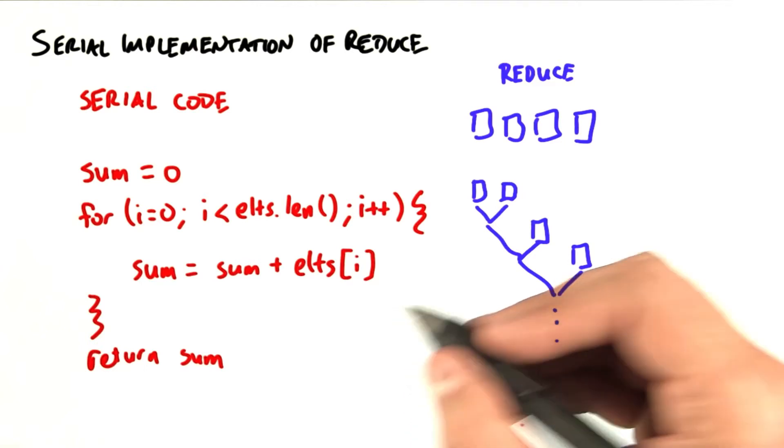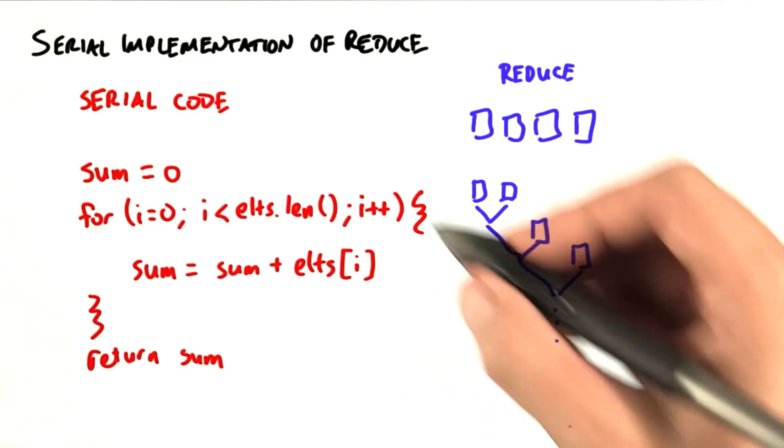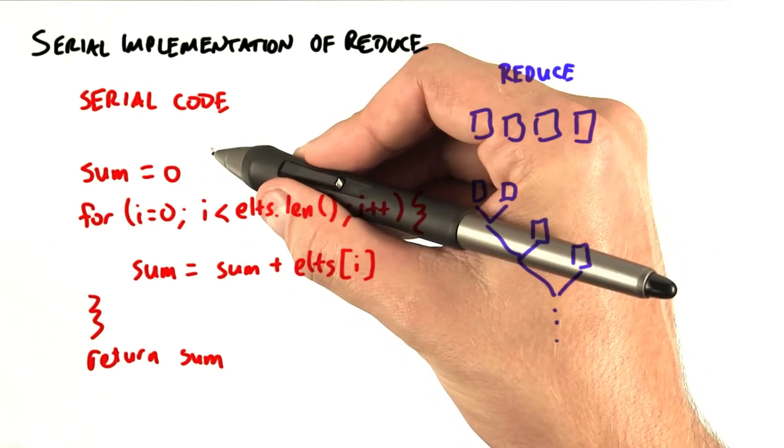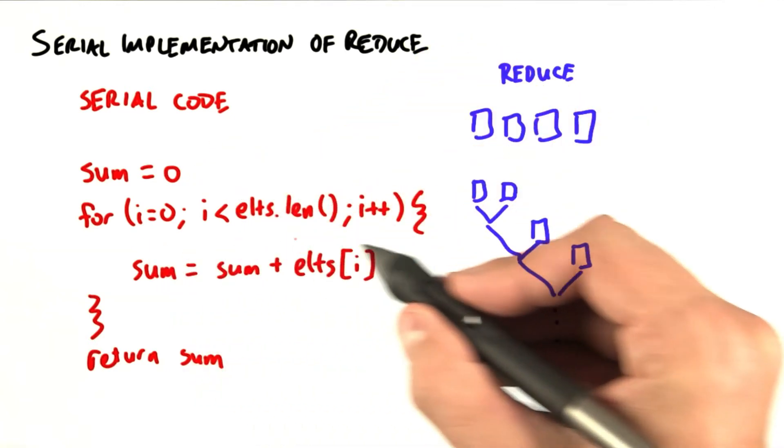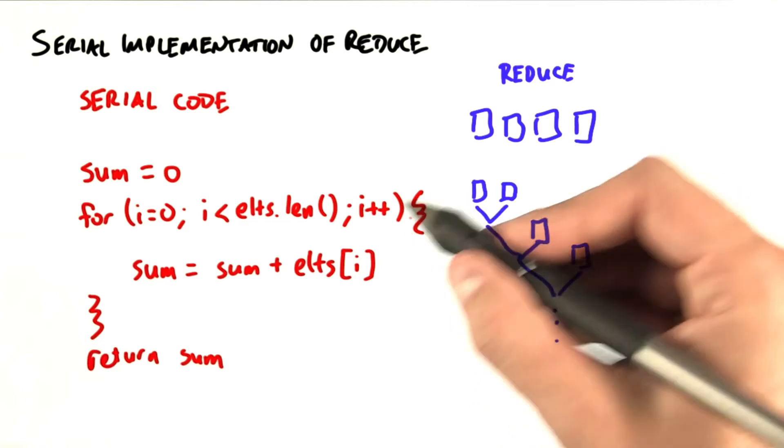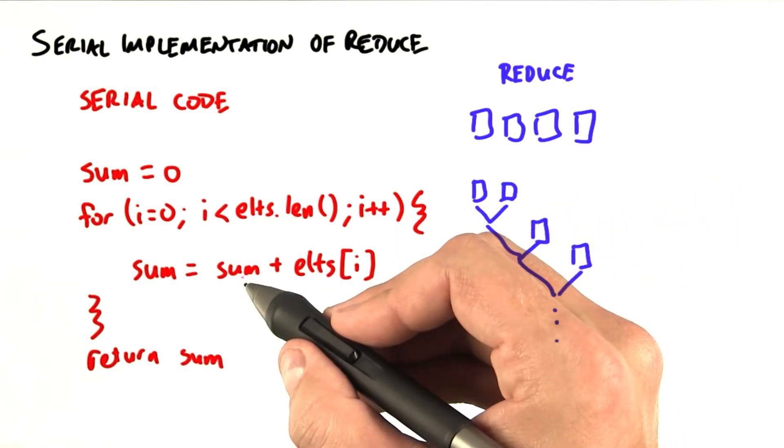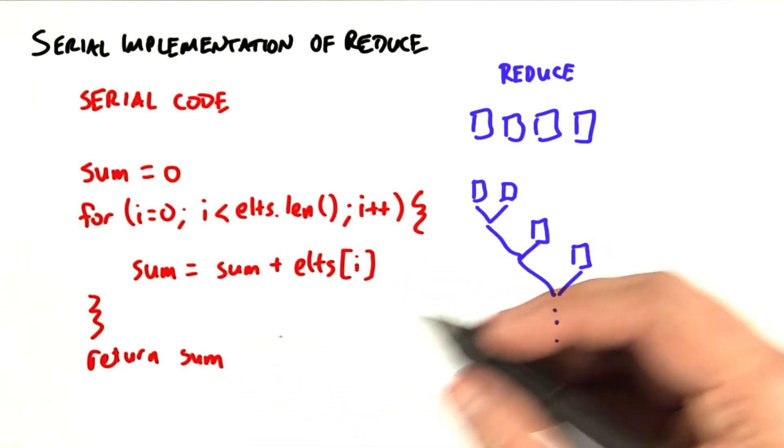And here's the serial code to sum a series of elements, and this is relatively straightforward. We have a serial variable named sum. We initialize it to 0. We then loop through our set of elements and on each iteration add the current element to the previous sum. And so when we're done we can return this sum variable and we're done.